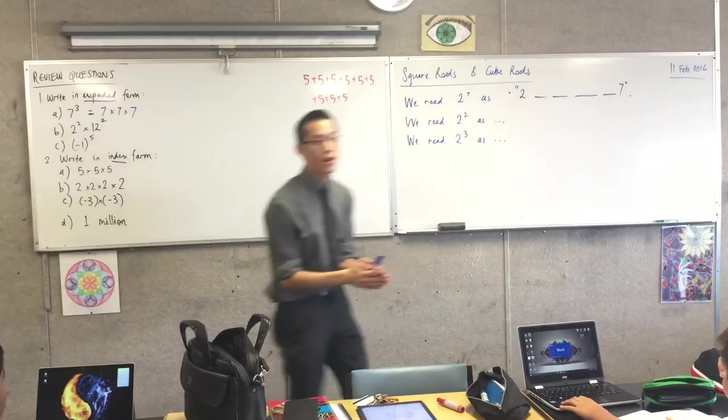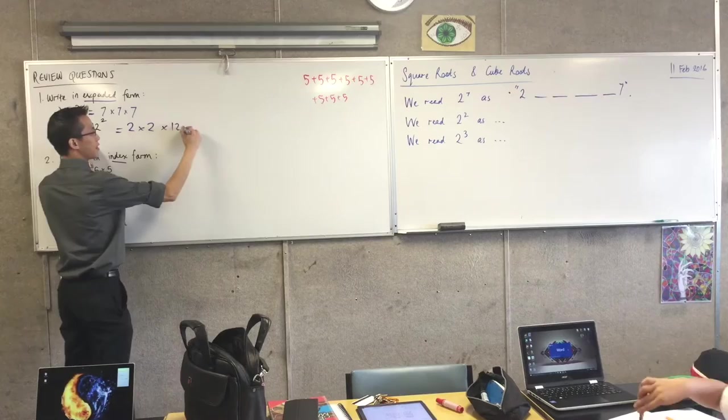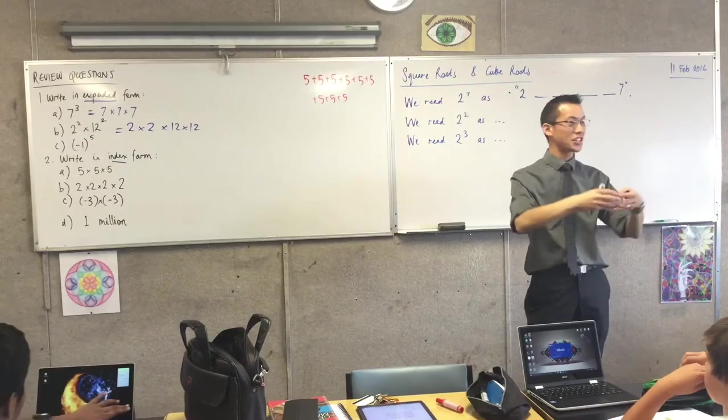How can we write the second one in expanded form? Any takers? Someone hasn't done anything? Yeah. Twelve times twelve times twelve times twelve. Very good. Fantastic. So you can see we're just stringing them along. It's not a big deal. And you can see also why it's called expanded form. They've got bigger, it takes more time to write.